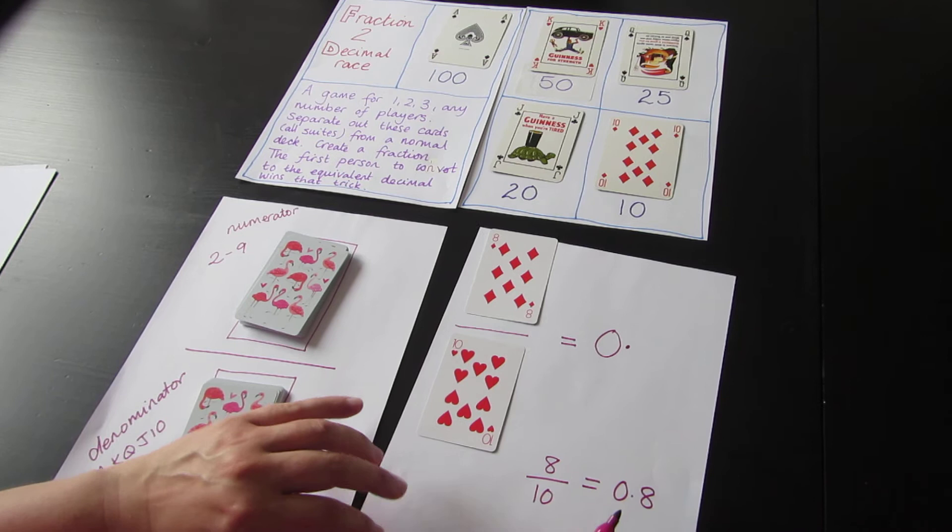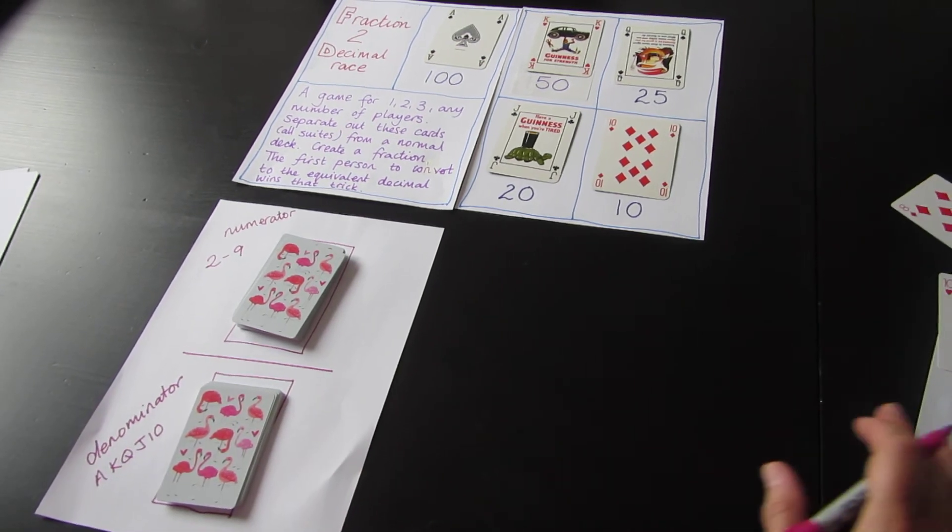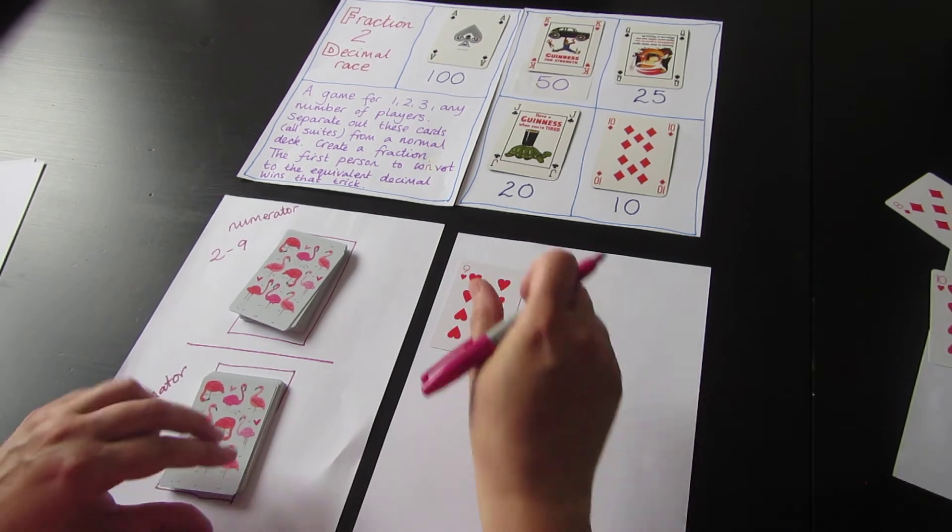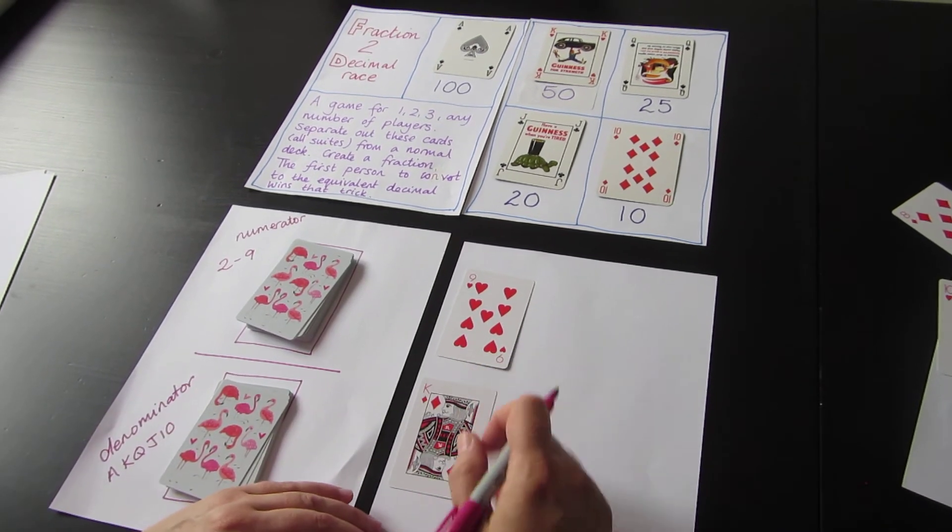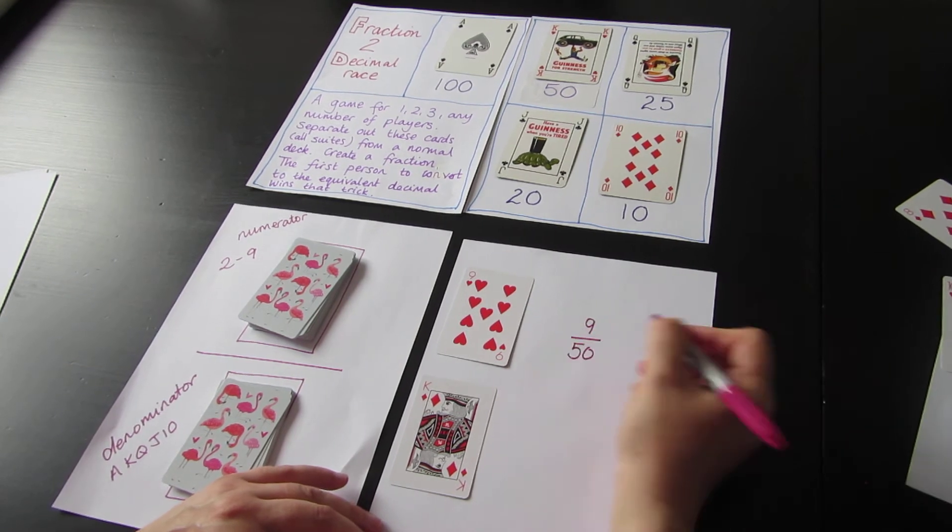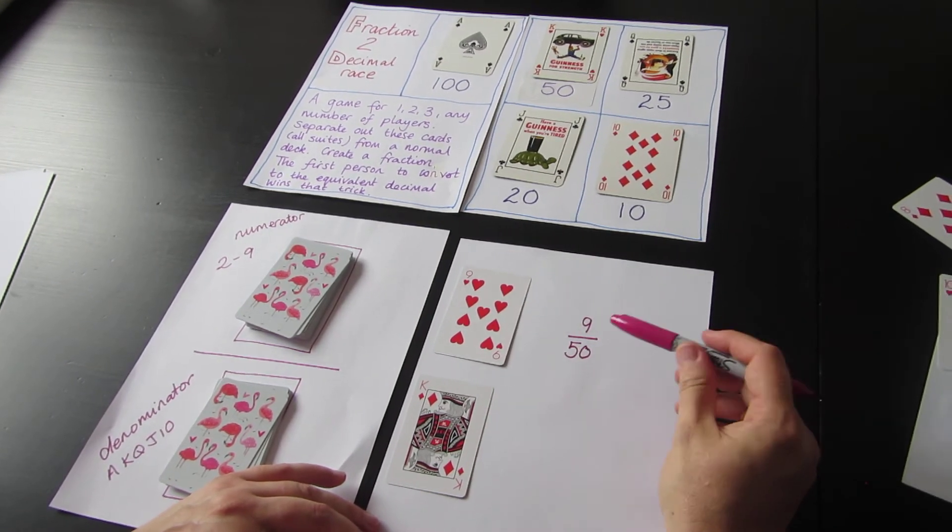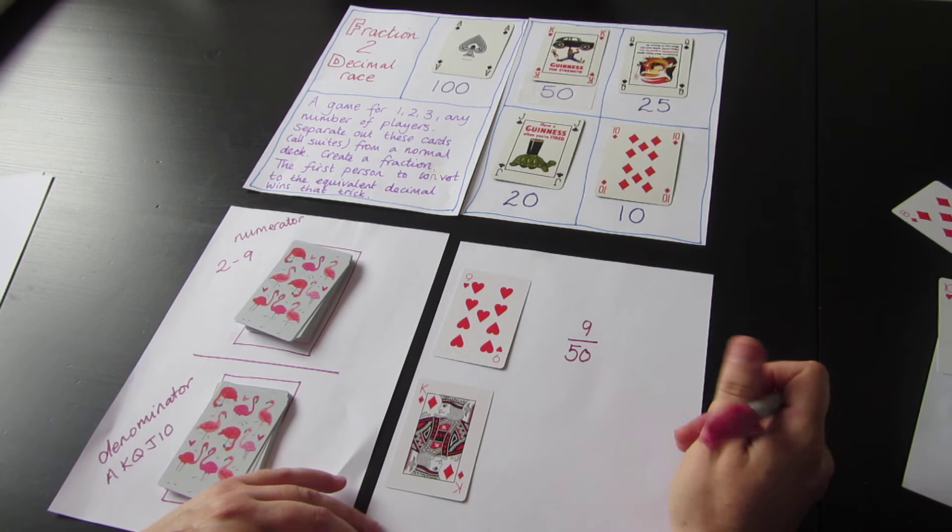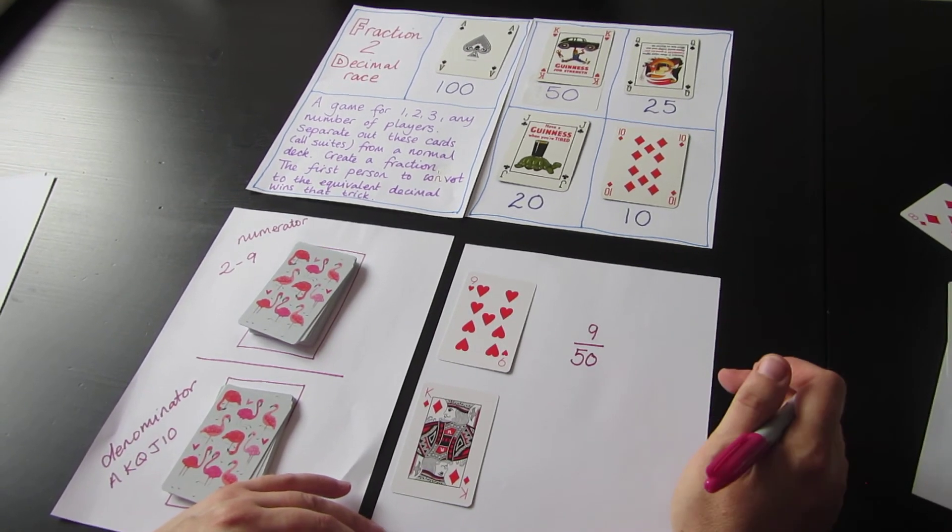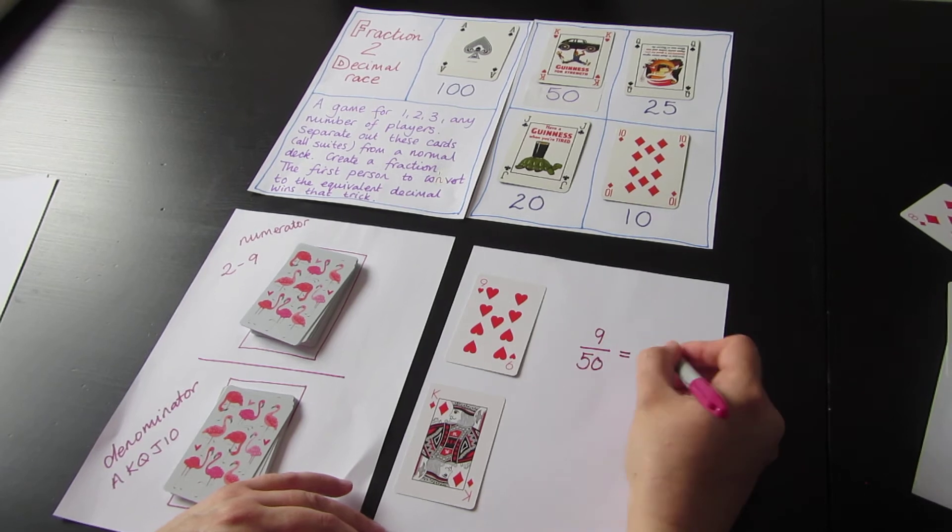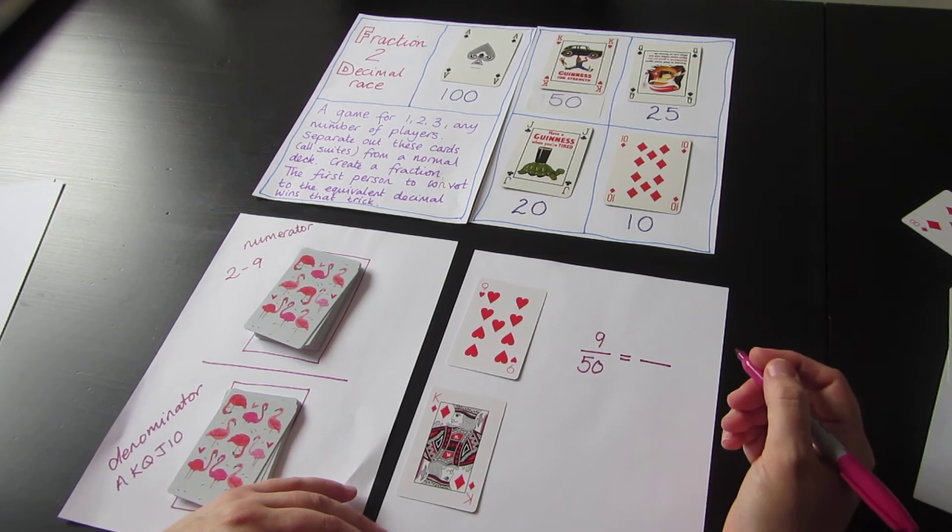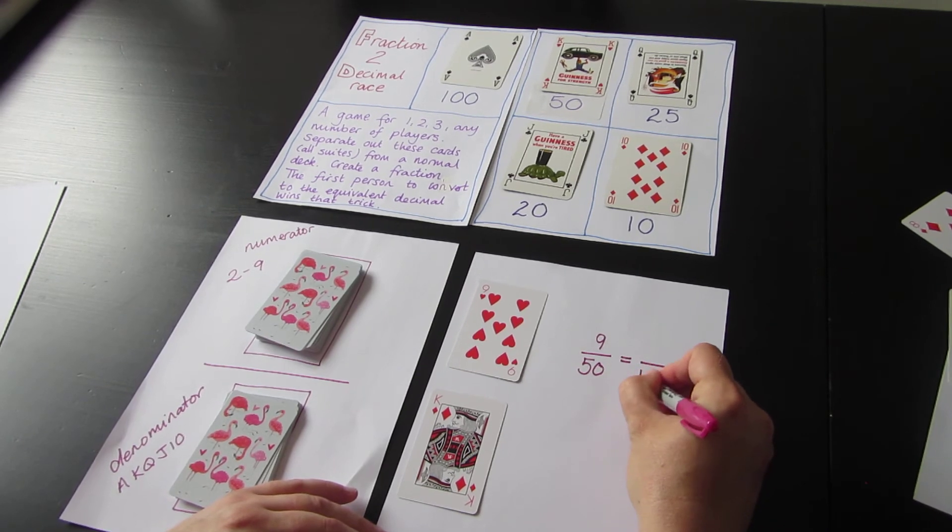Nine is my numerator. Nine kings - so that's 9/50. Now with this one, it is quite hard, a little bit harder. We don't have a fiftieths column in our place value - we have tenths and then hundredths. So first, a little bit of fraction work: fiftieths we need to make into hundredths.